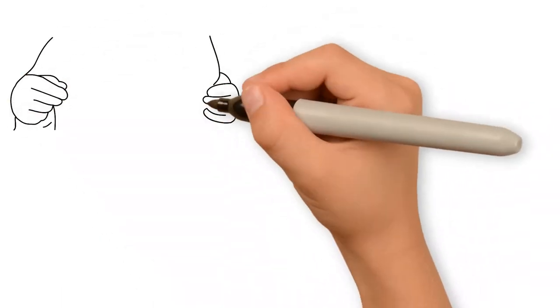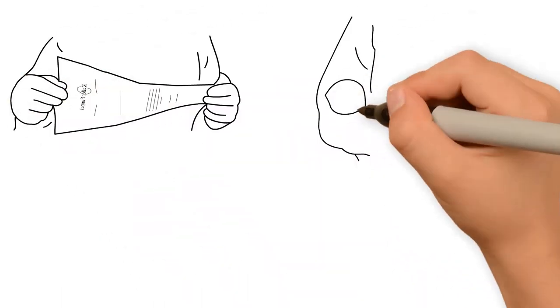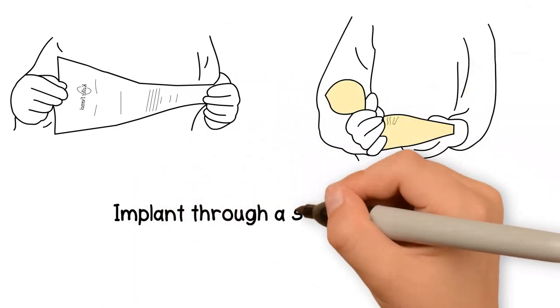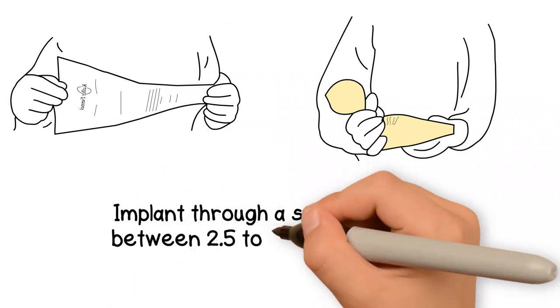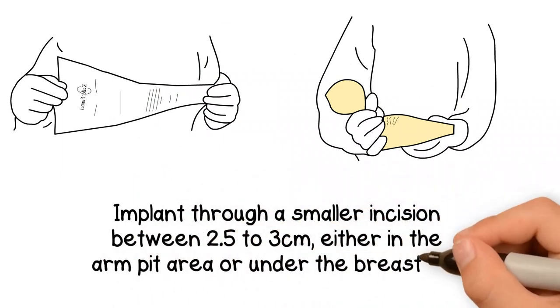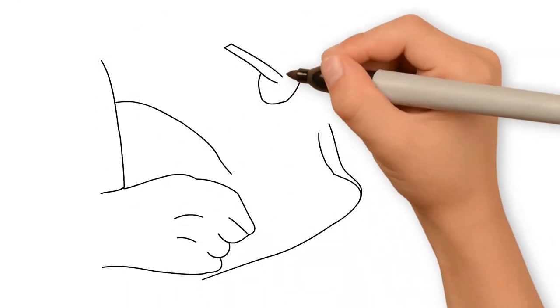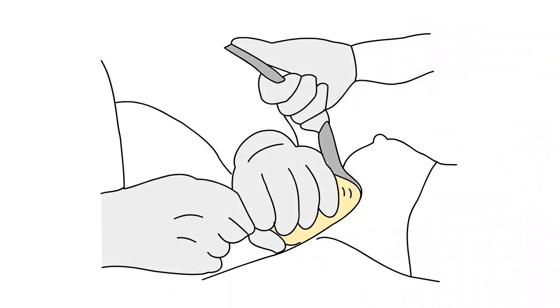For silicone implants, we use the Keller funnel, a device that makes it possible to insert a larger fuller implant through a smaller incision between 2.5 to 3cm, either in the armpit area or under the breast fold like a saline implant. The implant is placed under the pectoral muscle and adjustments are made before closing.